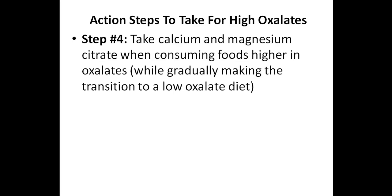Step number four is to take calcium and magnesium citrate when consuming foods higher in oxalates, while of course gradually making the transition to a lower oxalate diet. The research shows that citrate inhibits the formation and growth of calcium crystals. And since approximately 80% of stones are calcium-based, it might seem counterproductive to take calcium, but supplementing with calcium can actually inhibit the intestinal absorption of oxalates. If you choose to take a calcium supplement for high oxalates, 200 to 400 mg of calcium citrate would be a good option. Taking an equivalent amount of magnesium citrate also can be beneficial.